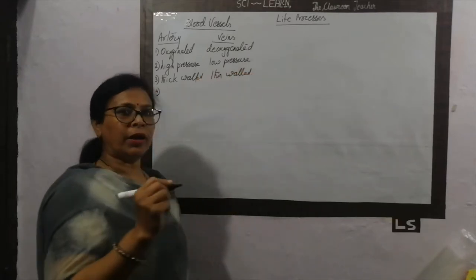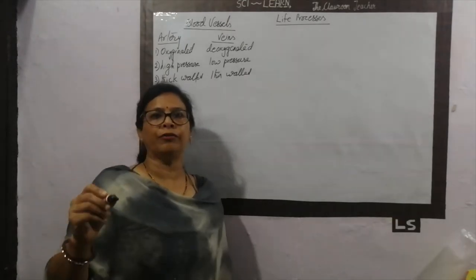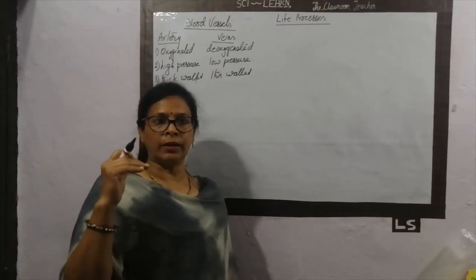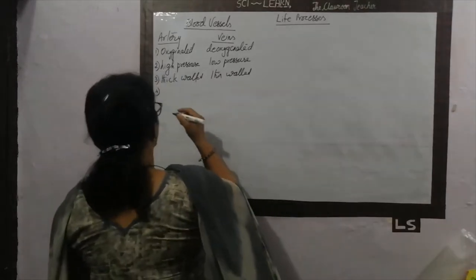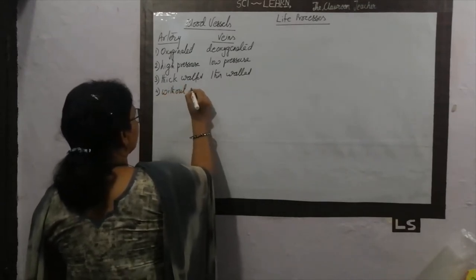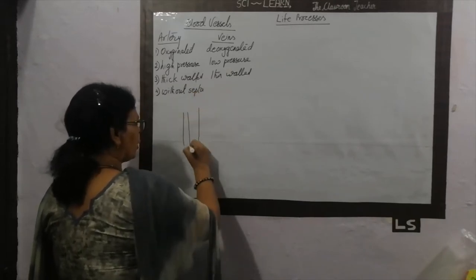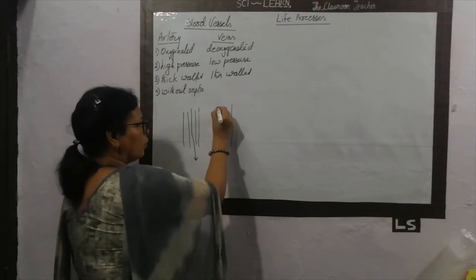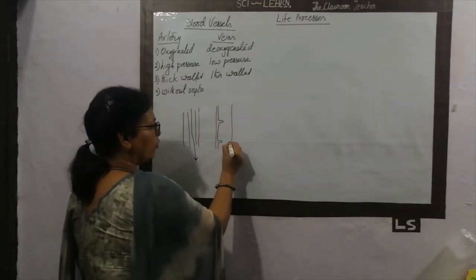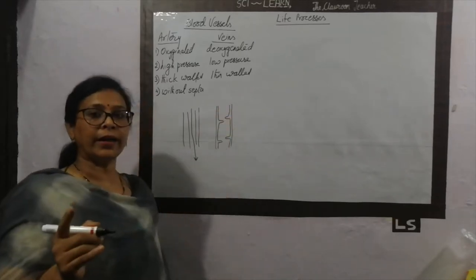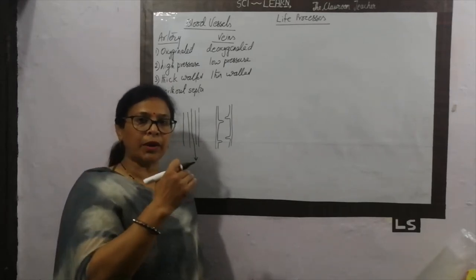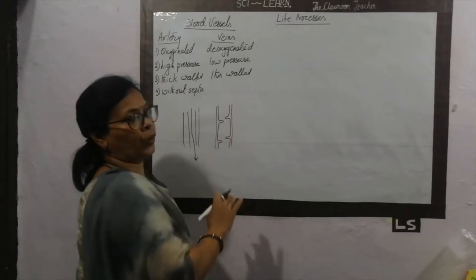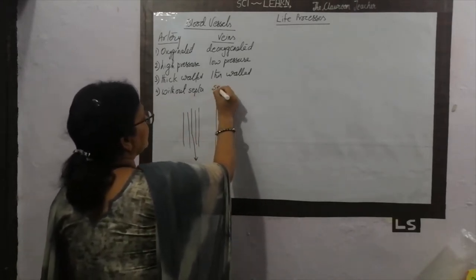The blood flows in arteries from heart to different parts of the body, so there is no barrier or septa present in the artery — no septa is present. Septa is the part which blocks the flowing of blood. The artery wall is thick and blood flows smoothly through it. But in the vein, the wall is thin and it also contains septa. Septa is important to avoid the reverse flow of blood, since veins carry blood from the toe back to the heart. Septa prevents backflow from the upper part to the lower part. So septa is absent in arteries but present in veins.